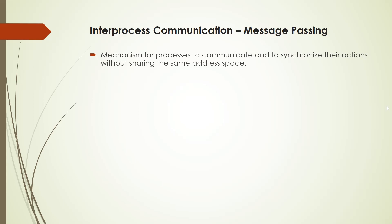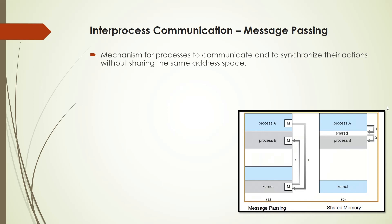In message passing, the processes communicate and synchronize their actions without sharing the same address space. Process A and B are not sharing the same address space. Instead, they can directly communicate with the help of sending messages — process A sends a message and process B receives a message.